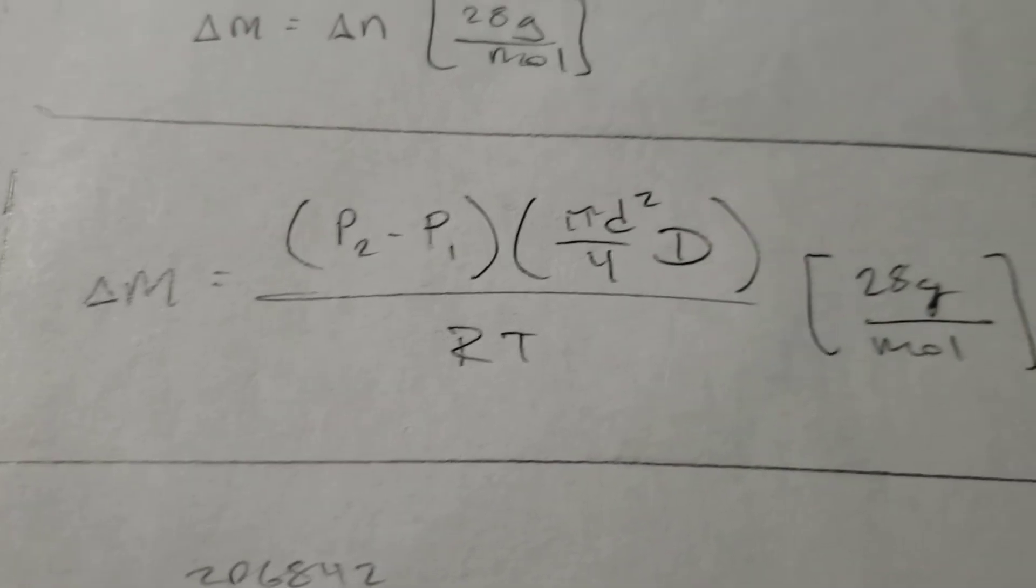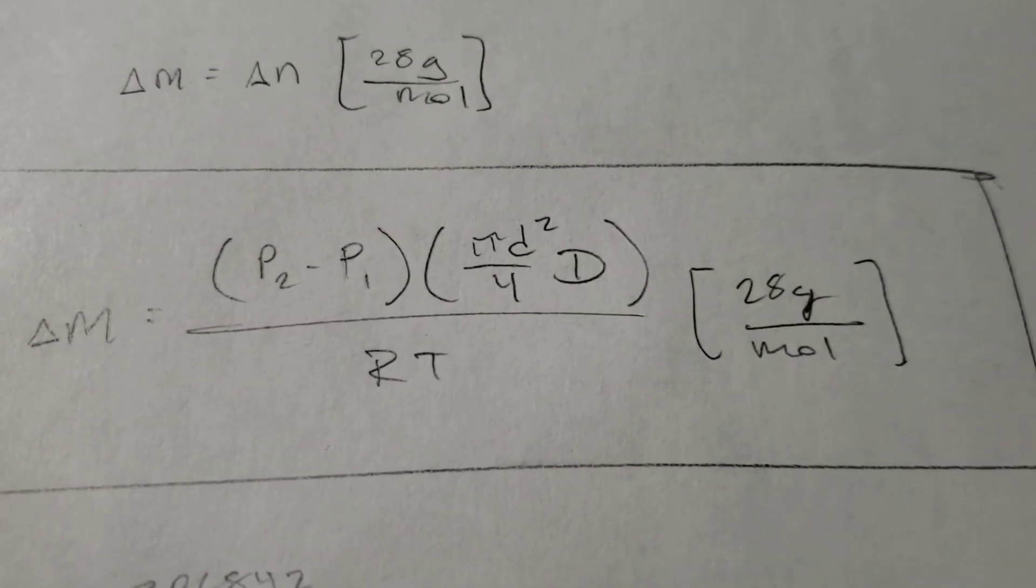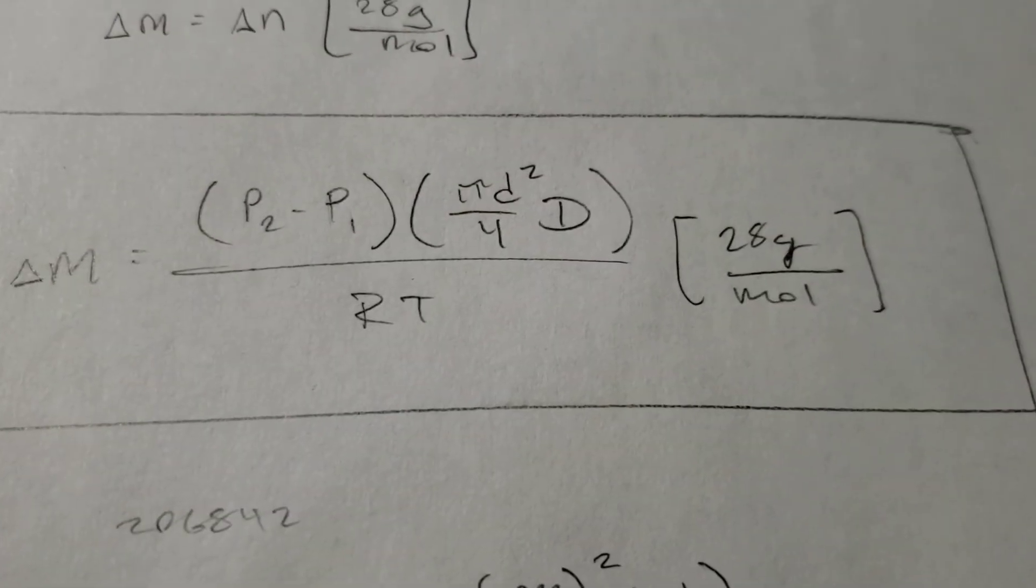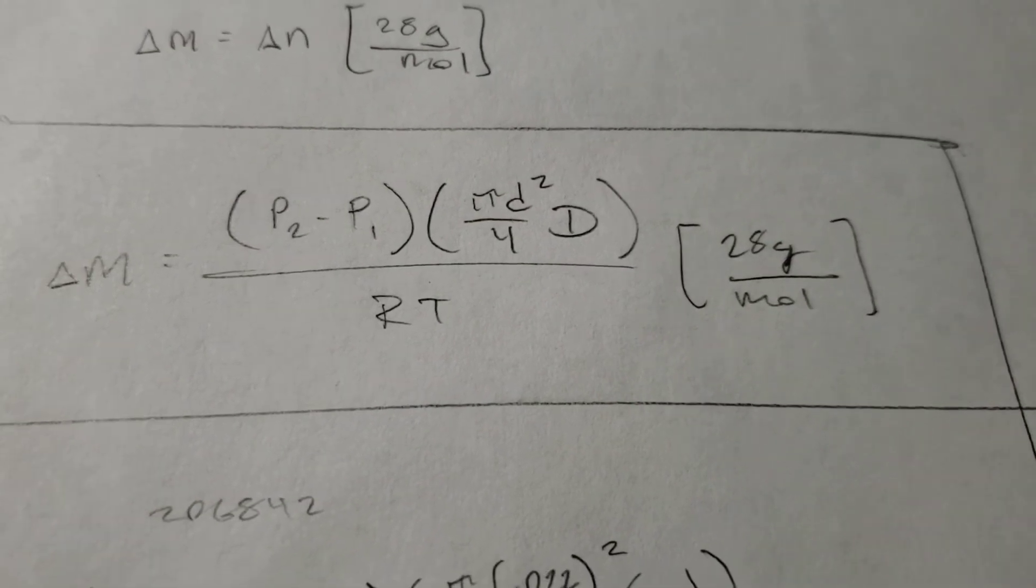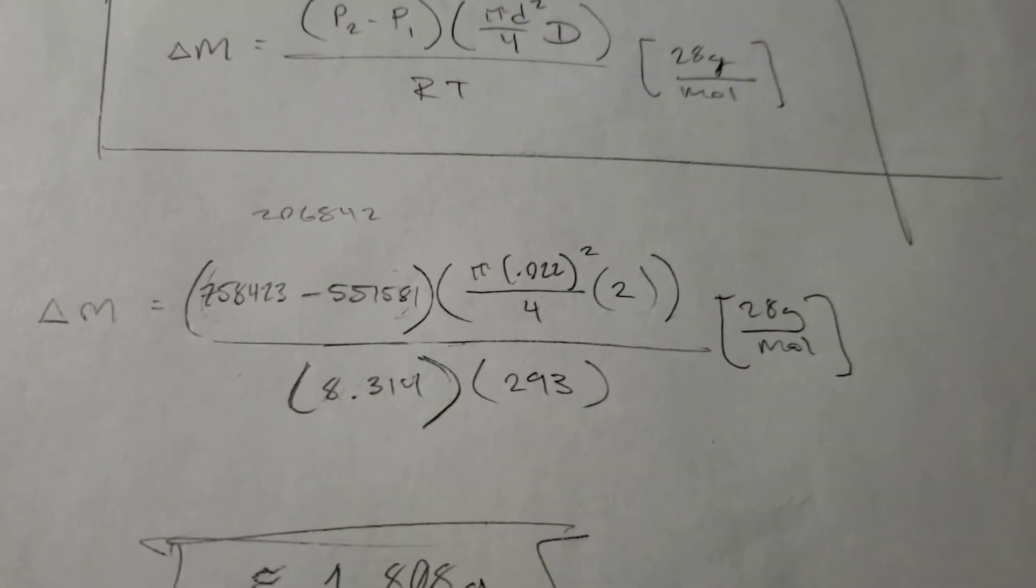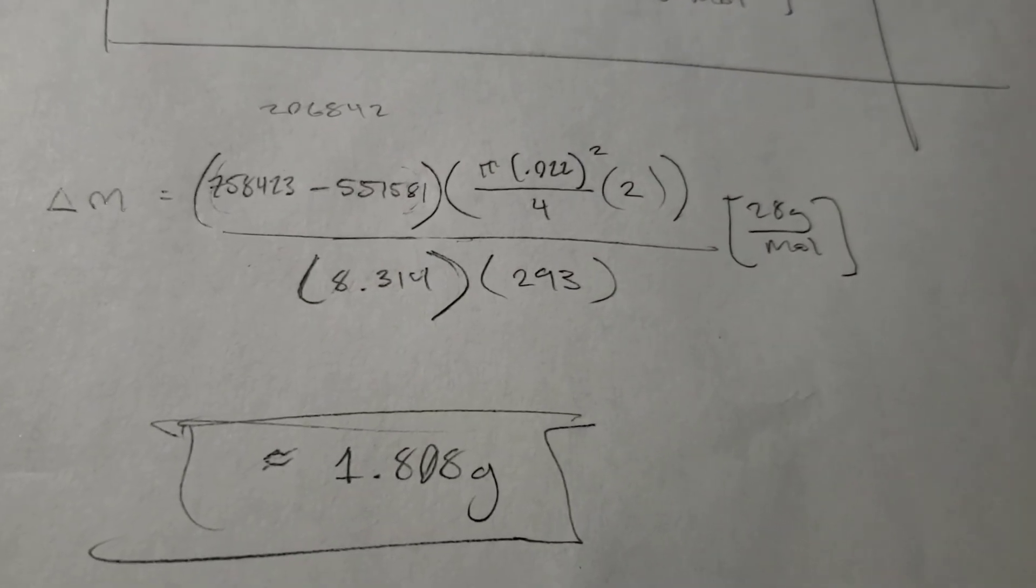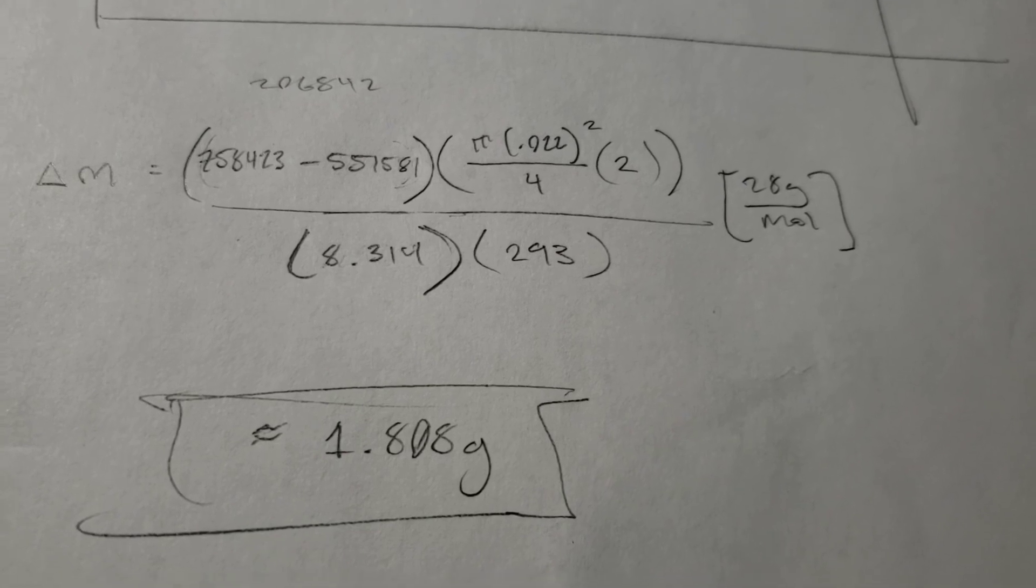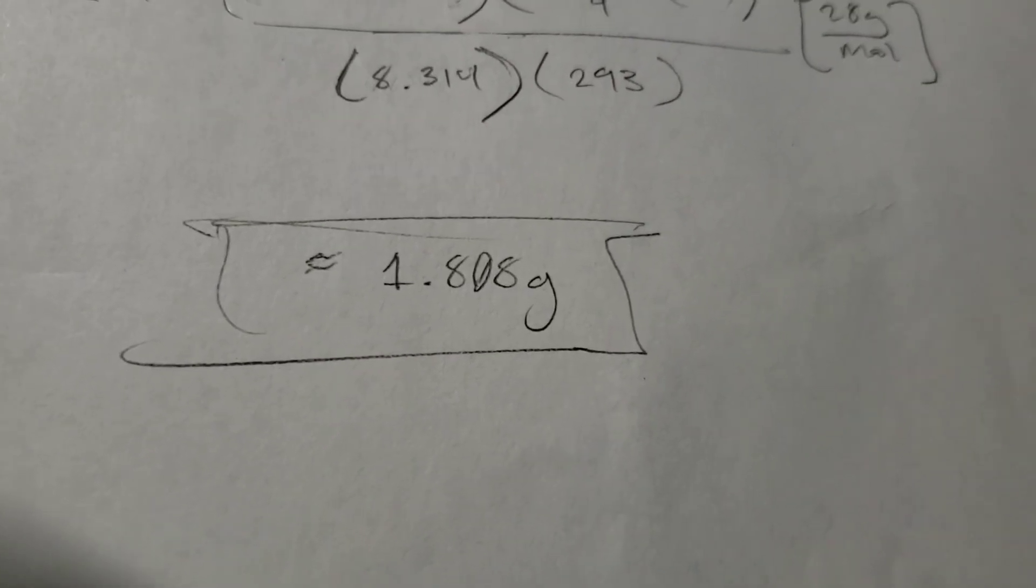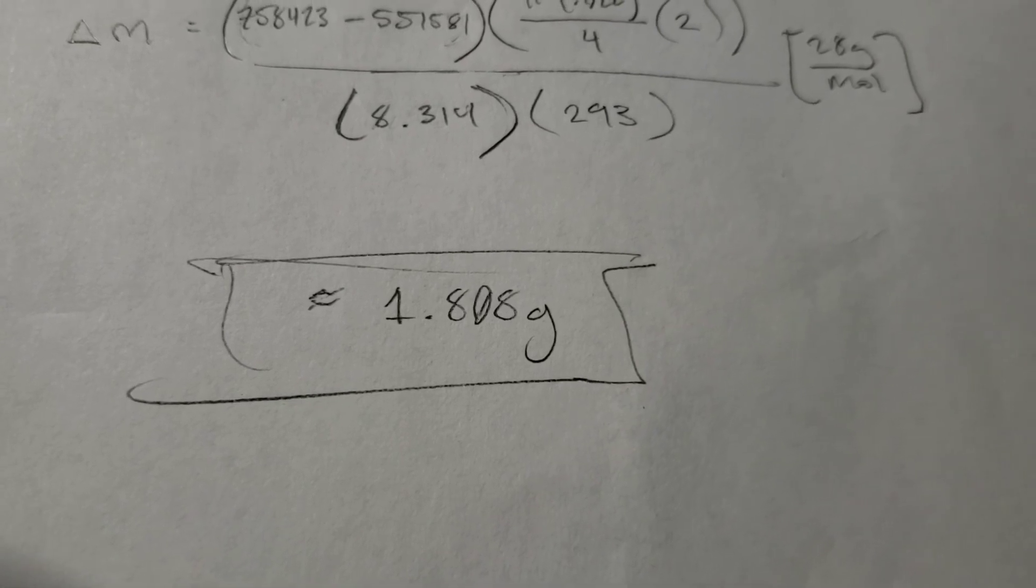We know the two pressure values that the problem give us. We know the diameter and the circumference. We know R is a known value, and temperature is, again, given in the problem. And then, of course, this is just a known conversion rate. Substituting all those values in and making sure to convert into SI units before calculating, you should get about 1.8 grams is the drop in mass.